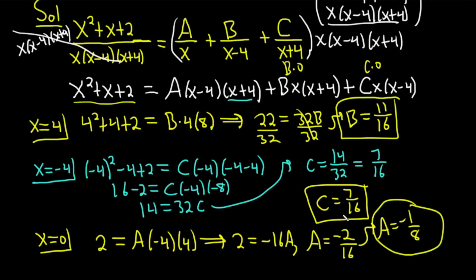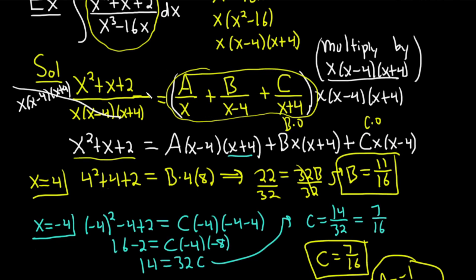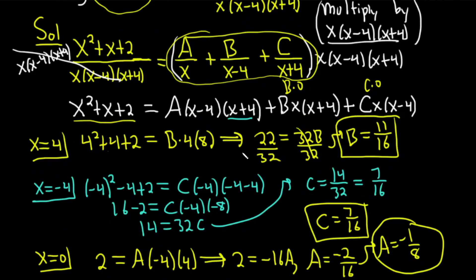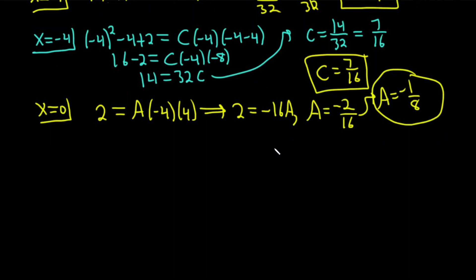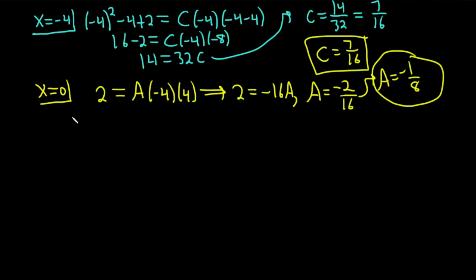Now what we're going to do is we're going to take the A, B, and C, and we're going to plug them back into A over x plus B over x minus 4 plus C over x plus 4. And then we're just going to integrate that. Because that's what our original integral is going to be equal to because we rewrote it. So let's go ahead and do that. I'm going to write it down here so you see it. So we have A over x, and then we have plus B over x minus 4, and then we have plus C over x plus 4.